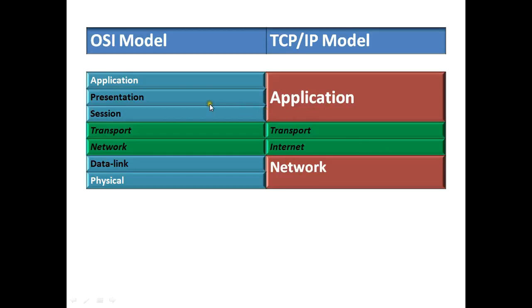In the TCP & IP Model, the application layer is a single layer — this is the higher level layer, layer 4. In the OSI Model, you will see 3 layers: the application layer, presentation layer, and session layer.